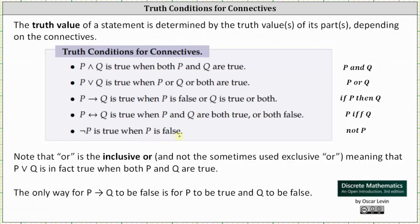Notice how we are using the inclusive or for P or Q. Also notice the only way for if P then Q to be false is for P to be true and Q to be false, because if P then Q is true when P is false, or Q is true, or both are true.